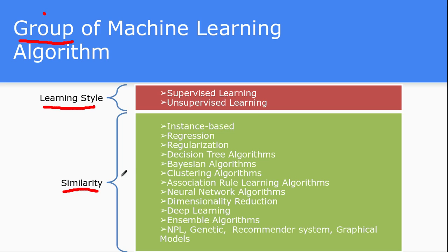The other way to group algorithms is with similarity-based grouping. All those similarity-based algorithm families include: instance-based algorithms, regression algorithms, regularization, neural networks, clustering, deep learning, symbolic algorithms, and domain-specific ones like natural language processing algorithms, evolutionary algorithms like genetics, recommendation systems like those used on Amazon, Netflix, or YouTube, and graphical models. For each category of similarity-based algorithms, they try to achieve the same goal using different techniques — the goal is similar, hence the name.